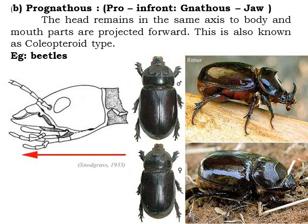The second head position is prognathous — 'pro' meaning in front. The head remains in the same horizontal axis as the body, and the mouth parts are projected forward. This is known as the coleopteran type of mouth position, covering mostly beetles. Rhinoceros beetles and similar biting insects have this prognathous type of head position.